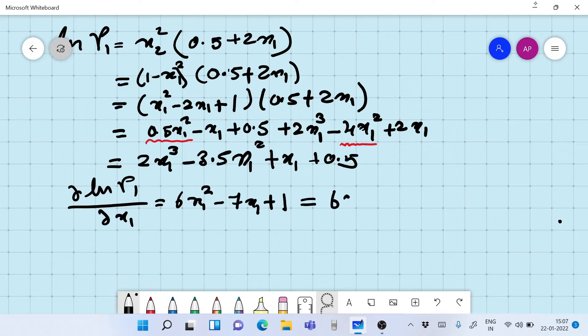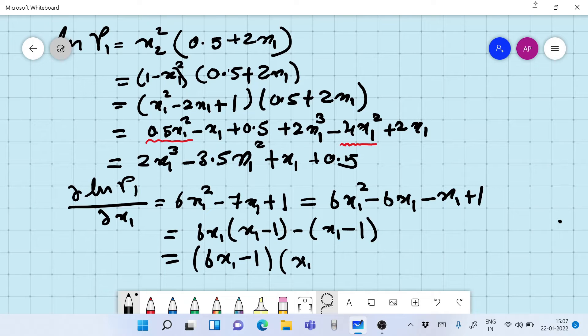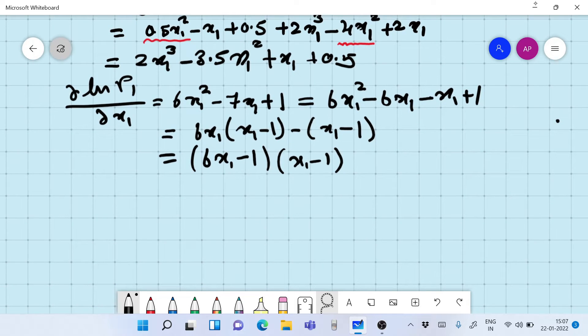Now the interesting thing that you need to do here is now you have to differentiate this. So d ln gamma 1 by dx1 is going to be equal to 6x1 square minus 7x1 plus 1. This is what we are left with.